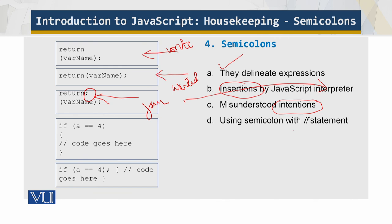If you're using a semicolon with an if statement, you have to be careful. Placing a semicolon at the end of the if condition will cause the block to do nothing. The statement or block of statements in opening and closing braces that follow the condition is part of the if statement. A semicolon marks the end of the if statement, and if improperly placed, it disassociates the first part of the if statement from the rest of the code. The code within the braces will execute regardless — and that is wrong.